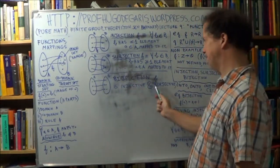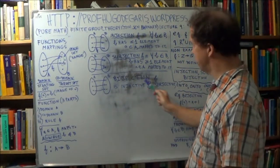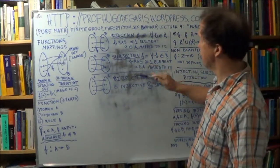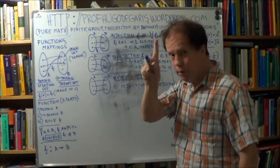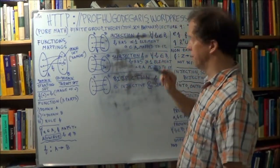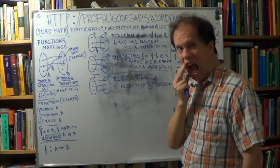Now, bijection, or bijective, or bijective function, by definition, is just a function that is both, both injective and surjective. It's both.